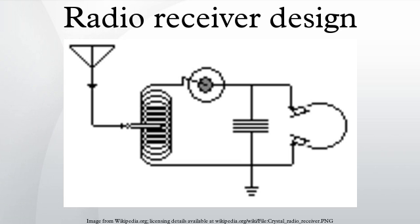Tuned radio frequency: The tuned radio frequency receiver consists of a radio frequency amplifier having one or more stages all tuned to the desired reception frequency. This is followed by a detector, typically an envelope detector using a diode, followed by audio amplification.